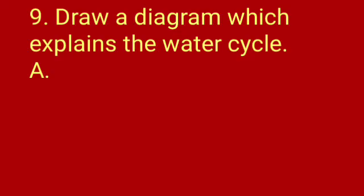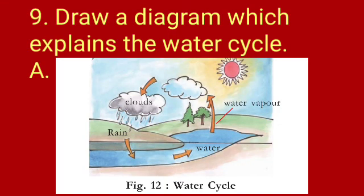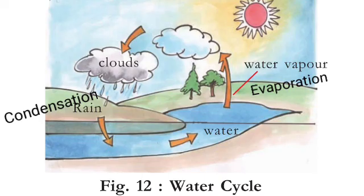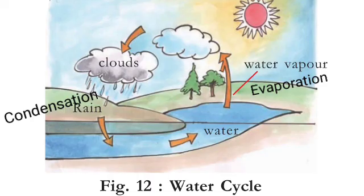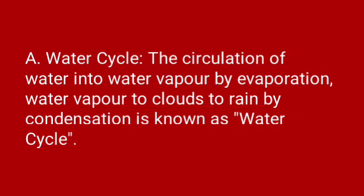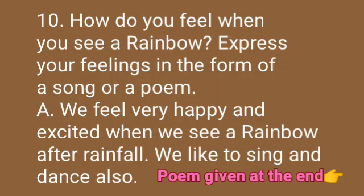Ninth question: Draw a diagram explaining the water cycle. You can draw the water cycle diagram from your textbook. In the figure, when sunlight is present, water in water bodies gets evaporated — that is evaporation. The water vapor stays in the clouds; once the clouds get cooled, condensation occurs and the water vapor falls down as rainfall. This is a continuous process. The definition of the water cycle: the circulation of water into water vapor by evaporation, and water vapor to clouds to rain by condensation, is known as the water cycle.